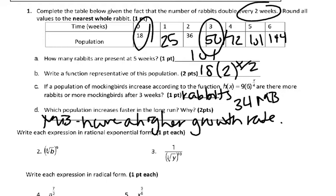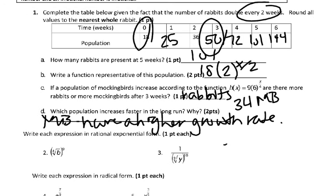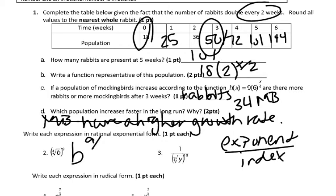So then we can do rational exponents. All it is we have exponent over index. The exponent in number 2 is 9. And our index was 4. Your base stays the base in both the radical and the rational exponent.